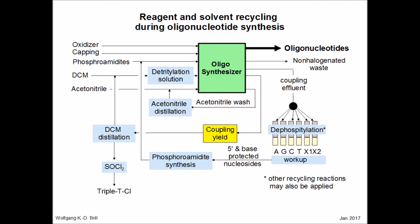Here are the reagent and solvent recycling steps during oligonucleotide synthesis. On the left, we see the starting materials: the oxidizer, the capping solution, the phosphoramidites, the dichloromethane used to make the detritylation solution, and the acetonitrile. On the right, we see the product — the oligonucleotides. The oxidizer and capping solutions after use will be drained to give the non-halogenated waste.